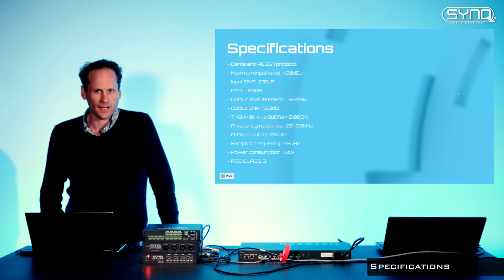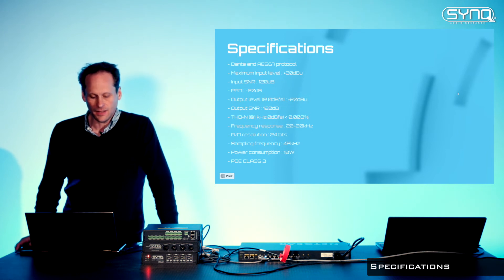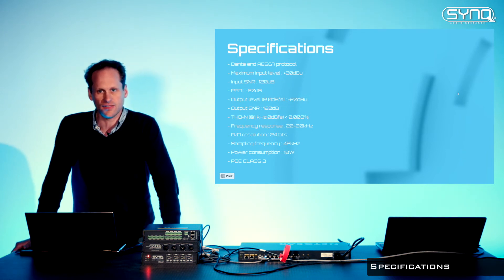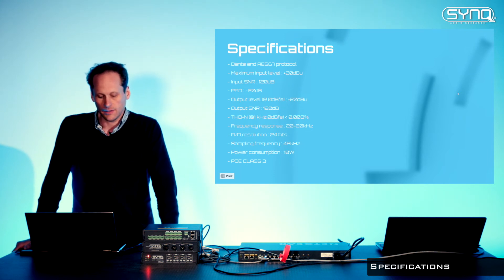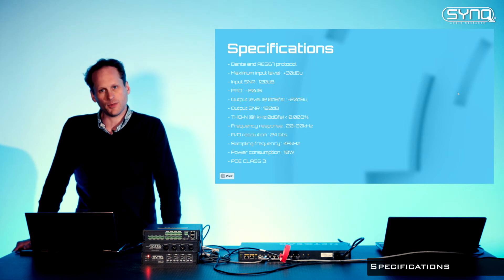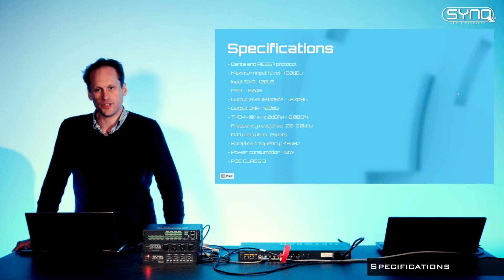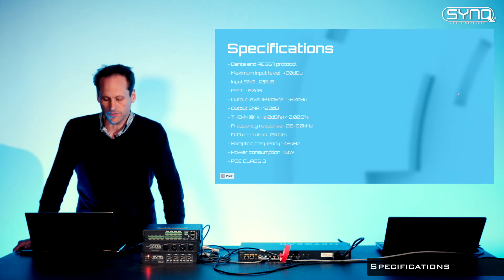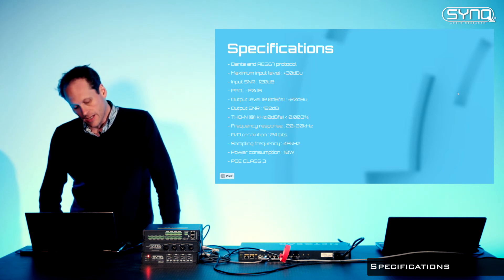The input levels are plus 20 dBu. We have a very high performance ADC and DAC. As you can see in my spec, we can achieve more than 120 dB signal-to-noise ratio on the input. The pad is minus 20 dB, and same for the output — the maximum output level is plus 20 dBu. Distortion is very, very low. Resolution is 24 bits and the sampling frequency is 48 kHz.